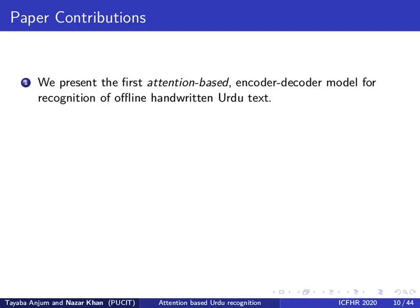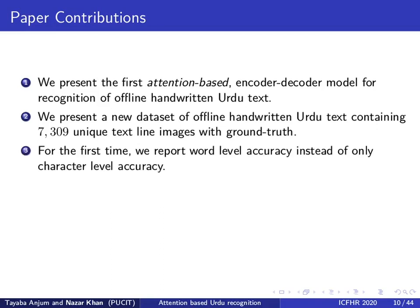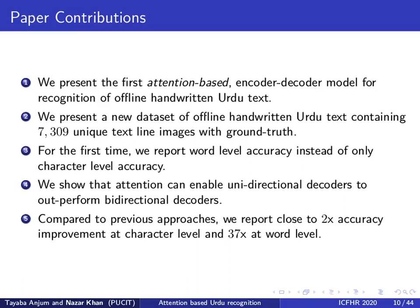In this work, we present the first attention-based encoder-decoder model for recognition of offline handwritten Urdu text. We present a new dataset of offline handwritten Urdu text containing more than 7,000 unique text lines with ground truth. For the first time, we report word level accuracy instead of only character level accuracy. We show that attention can enable unidirectional decoders to outperform bidirectional decoders. Compared to previous approaches, we report close to 2 times accuracy improvement at character level and 37 times improvement at word level.